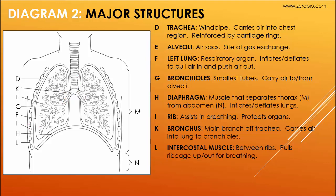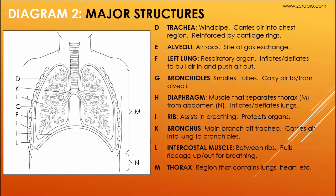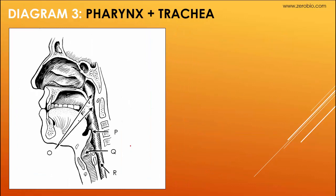In between the lungs are muscles called intercostal muscles — used for inhalation; when they relax, the rib cage falls. The thorax region, label M, includes all of the chest area including the heart. Label N, the abdomen, is below the diaphragm and mostly contains the digestive organs.